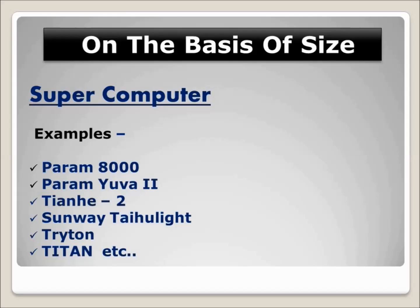Supercomputers perform huge calculations — mathematical and complicated calculations — very fast. That is why we use supercomputers in the fields of research centers, weather forecasting, genetic analysis, climate research, and quantum mechanics.